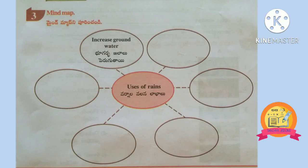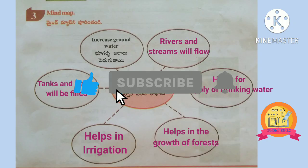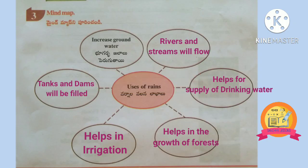Third Roman is Mind Map. In this mind map, we have to write uses of rains. Uses of rains are: increased groundwater, rivers and streams will flow, helps for supply of drinking water, helps in the growth of forests, helps in irrigation, tanks and dams will be filled.